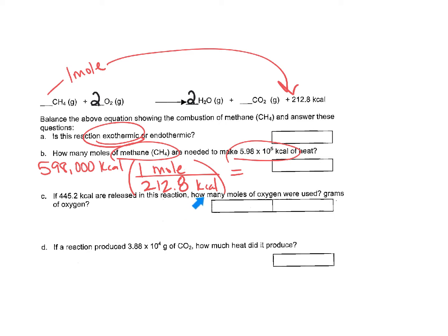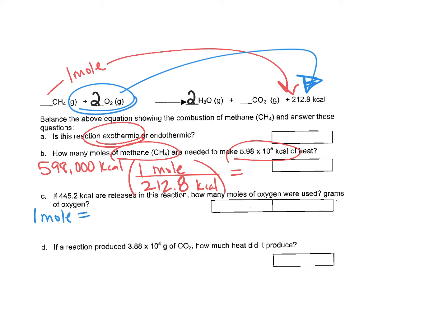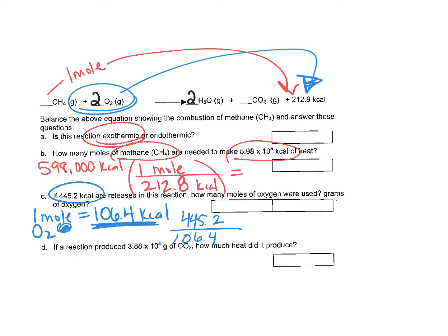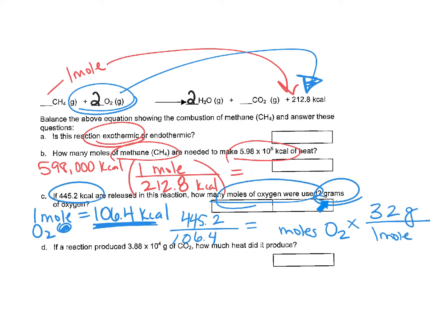The next problem asks how many moles of oxygen are used to make a given amount of energy, and how many grams that would be. Two moles of oxygen produces 212.8 kilocalories, so one mole of oxygen produces 106.4 kilocalories. If we need 445.2 kilocalories, we divide by 106.4 to find the moles of oxygen needed. Then we convert to grams using the molar mass — one mole of oxygen weighs 32 grams.